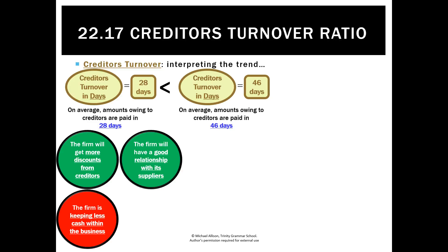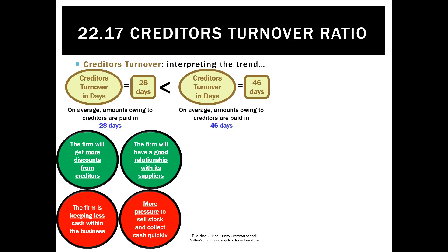However, the flip side is it could be a negative. Even though paying someone back earlier seems to be a good thing, it means we are keeping less cash within the business to pay other things. Creditors is one item we have to pay — we also have to pay bank loans and wages. So paying creditors back quicker — is that coming at the expense of other items? It's also going to create pressure on the cash cycle, so we'd need to get our cash cycle down to less than 28 days, which creates a lot of pressure.